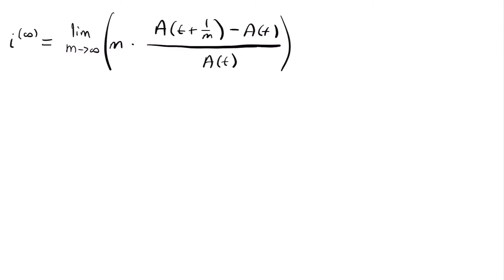This limit is very difficult to evaluate in its current form. So we're going to set 1/m equal to a new variable h. If 1/m equals h, then solving for m gives us m equals 1/h. So everywhere we have 1/m, we replace it with h, and everywhere we have m, we replace it with 1/h.